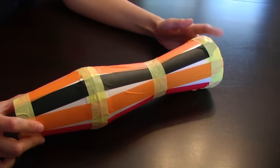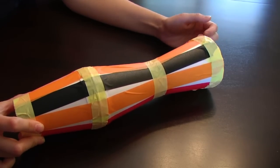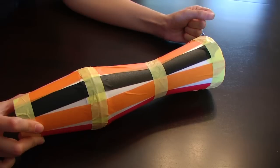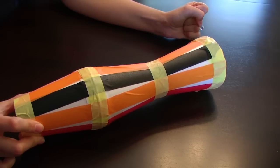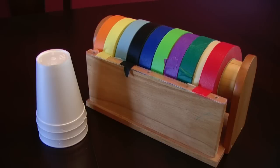The first idea is to make a drum using styrofoam cups and tape. The materials are three styrofoam cups and various colors of tape.